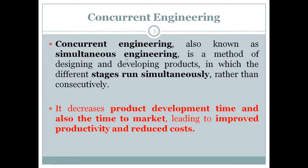Concurrent engineering is also known as simultaneous engineering. It is a method of designing and developing products in which different stages run simultaneously rather than consecutively. The different operations run at the same time. It decreases product development time and time to market, leading to improved productivity and reduced costs. Product development time is reduced, time to market is decreased, productivity increases, and costs are reduced.